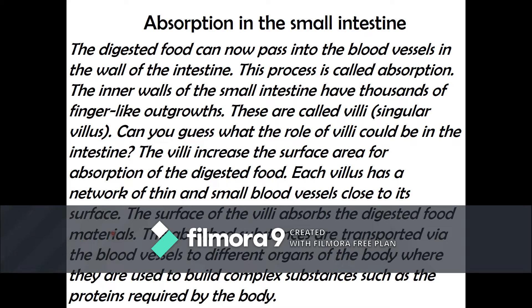The digested food passes into the blood vessels in the wall of the intestine. These absorbed substances are transported via blood vessels to different organs of the body, where they are used to build complex substances such as the proteins required by the body.